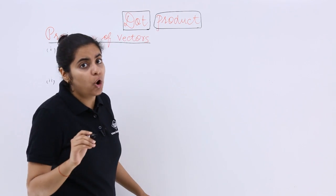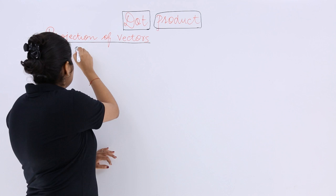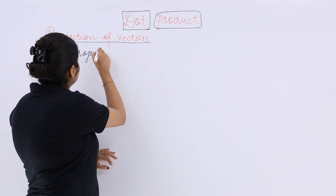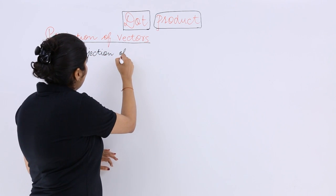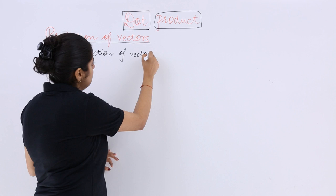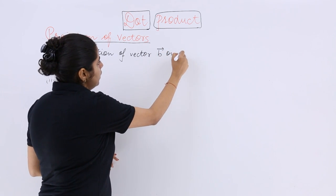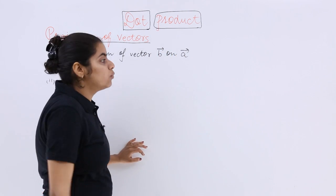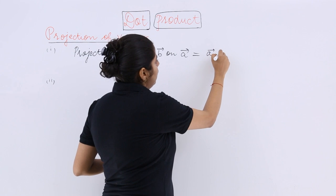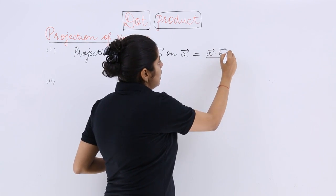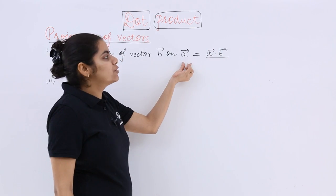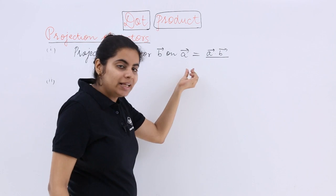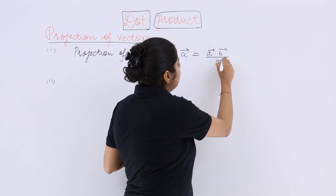So the first is projection of B on A. If I write projection of vector B on A, what should it be? The formula is the scalar product upon, on which vector you have to put a projection on A, so the magnitude of that vector.